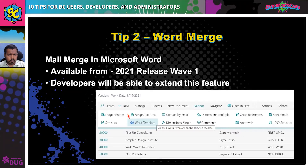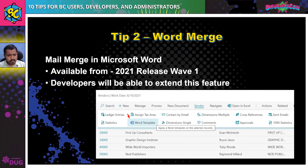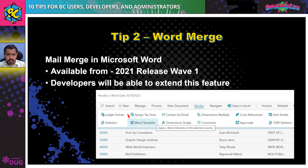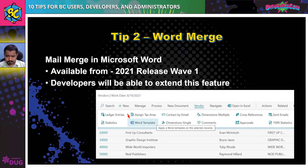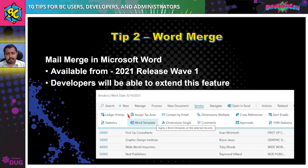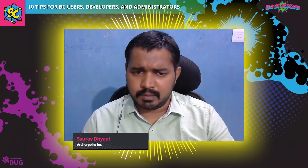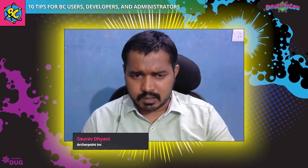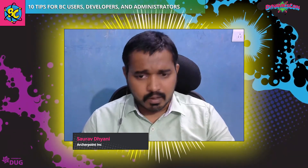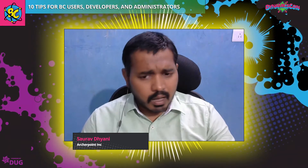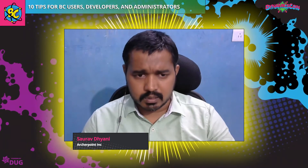Let's move to tip number two, which is around word merge. If you are a user that has used NAV in the past there were some basic word merge capabilities available. With Business Central 2021 Release Wave 1 Microsoft brought this word merge feature in a more advanced and simple way to extend. Microsoft Word templates can make it easier when you need to do mass communication with different entities in Business Central — for example sending a personalized message to each of your customers or greetings to all your vendors.